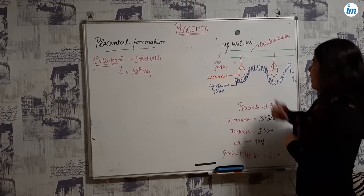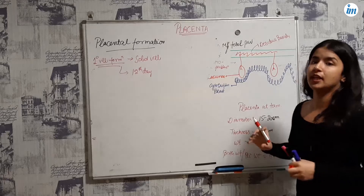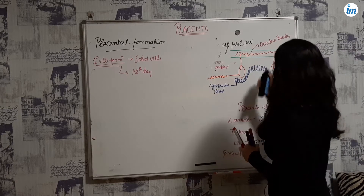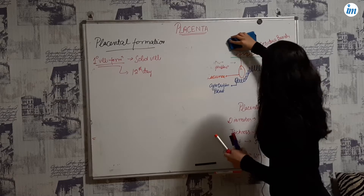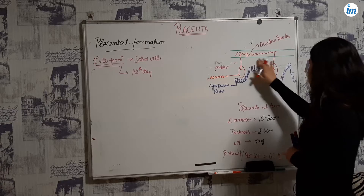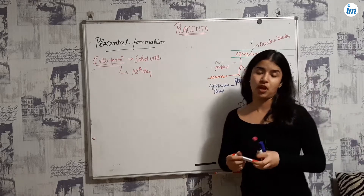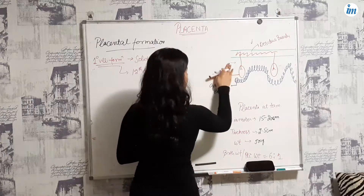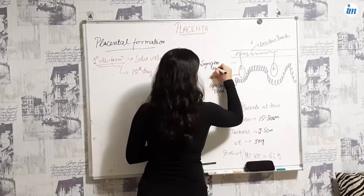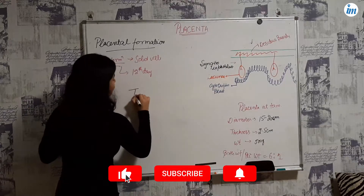Looking at the figure: the green line is the maternal part — the decidua basalis. The white portion is the syncytiotrophoblast. The trophoblast divides into two: the syncytiotrophoblast and the cytotrophoblast.